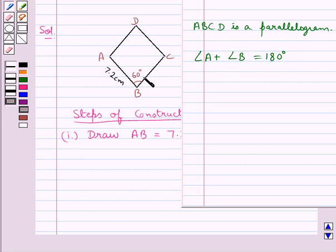Now we have that angle B is 60 degrees. So we have angle A plus 60 degrees is equal to 180 degrees, which means that angle A is equal to 180 degrees minus 60 degrees equal to 120 degrees.